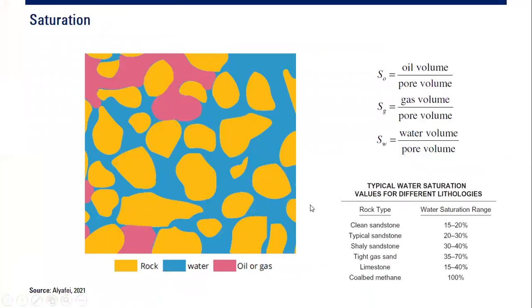By mathematical description, oil saturation (So) is oil volume divided by pore volume. Gas saturation (Sg) is gas volume divided by pore volume. Water saturation (Sw) is water volume divided by pore volume.